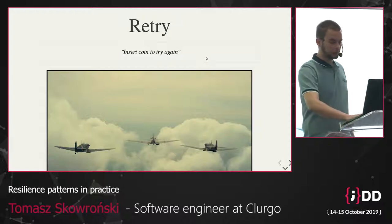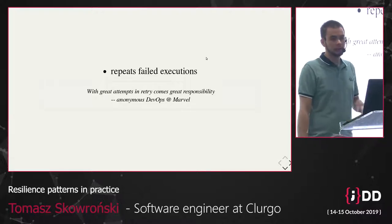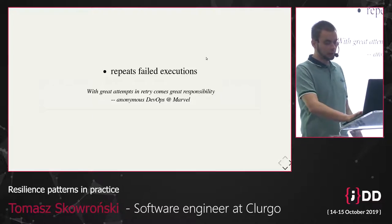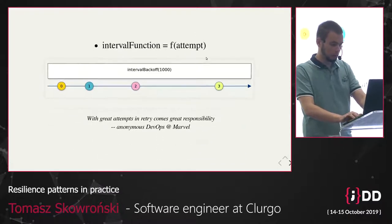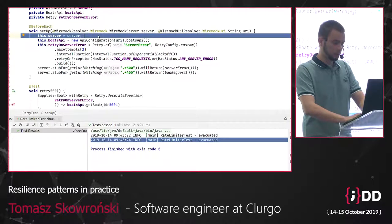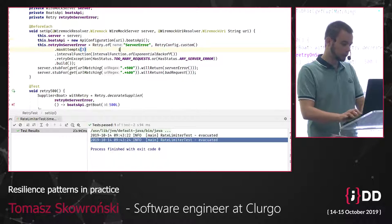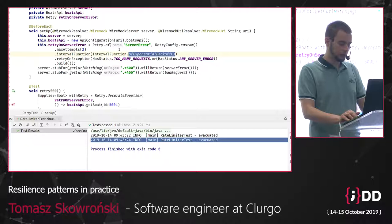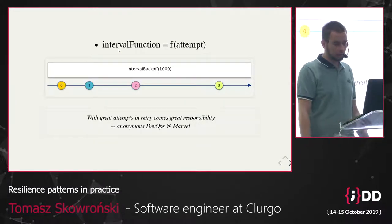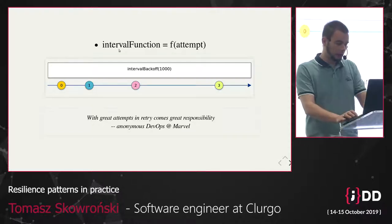Retry is also a pattern — probably the most popular — and we often forget that it is a resilience pattern. It repeats failed executions: if the first call is successful, there is no retry; otherwise, there are repeats. In the example, we use WireMock to mock an HTTP endpoint, create our boats API and retry, and allow a maximum of three attempts.